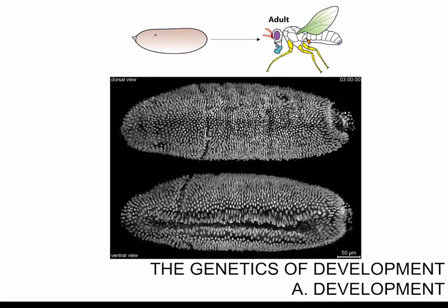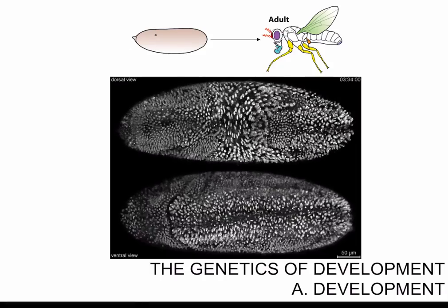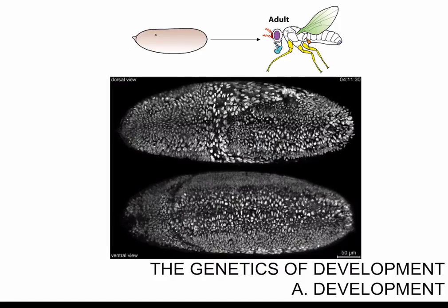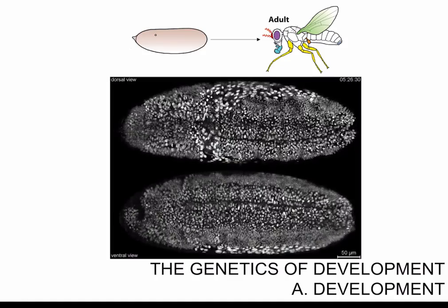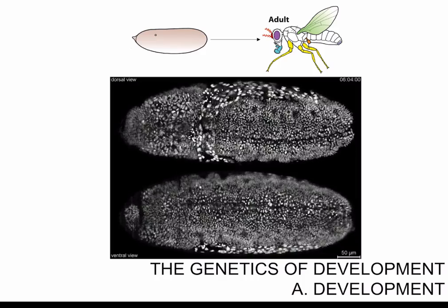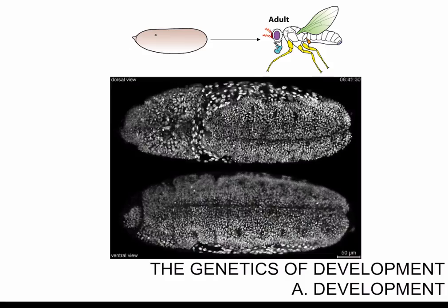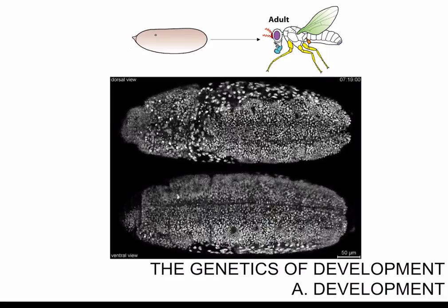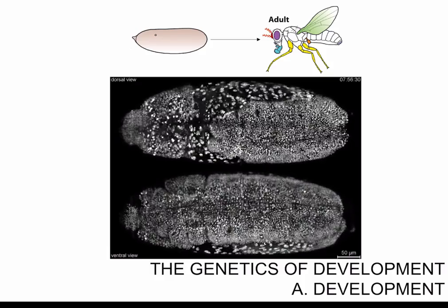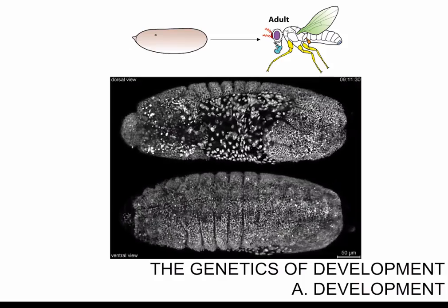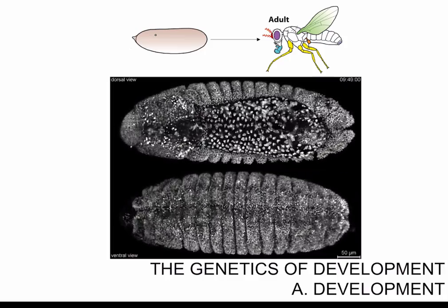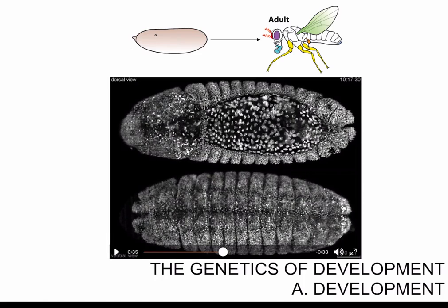In the next stage, the embryo undergoes a set of tissue movements called gastrulation that form the 3 main types of tissue in the organism: endoderm, which is gut and the digestive system; ectoderm, which is skin and neural tissue; and mesoderm, which is organs — everything that is not endoderm or ectoderm. At this stage what we are looking at is the organization of the embryo into repeating units called segments.